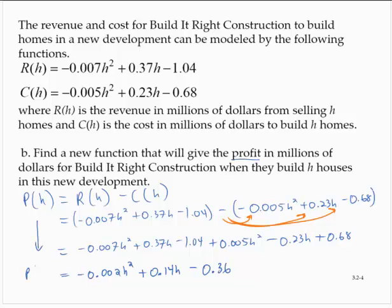So P of H is equal to negative 0.002 H squared plus 0.14 H minus 0.36. P of H is the profit in millions for building H homes.